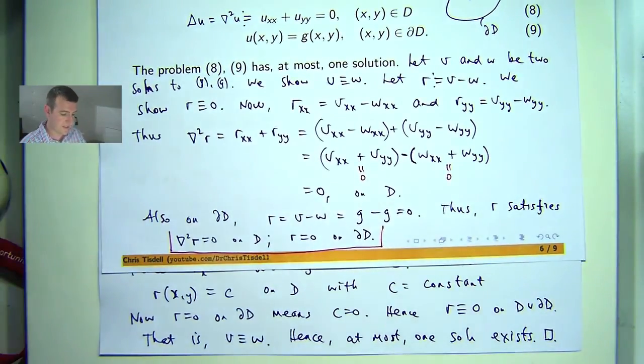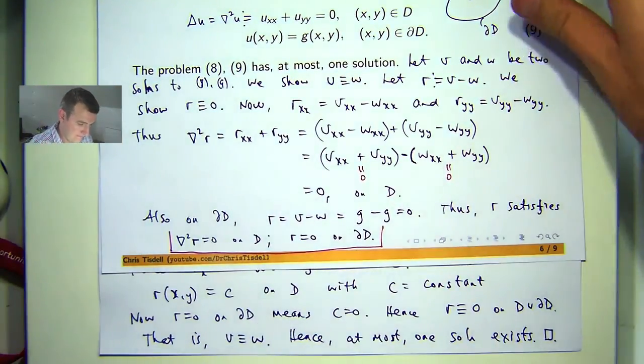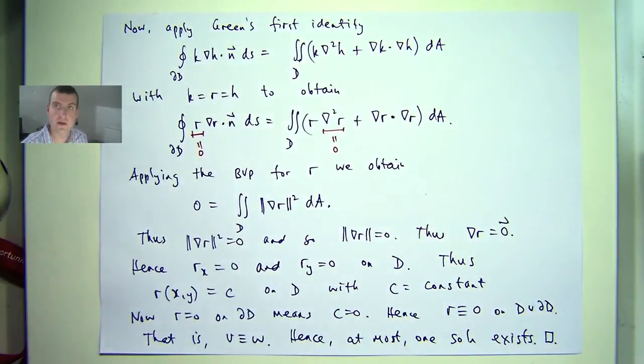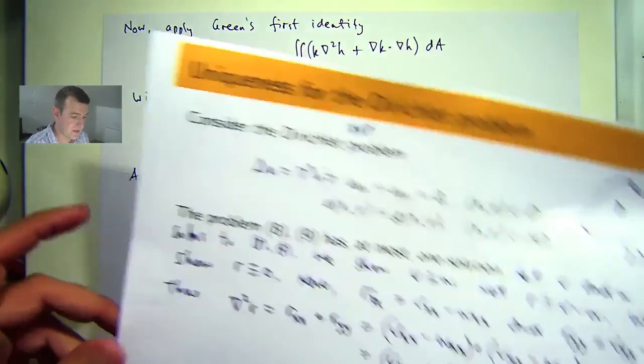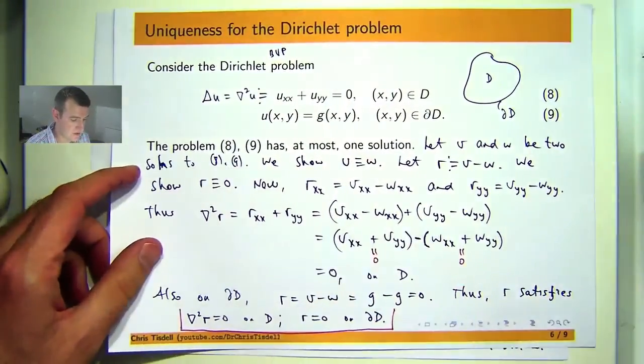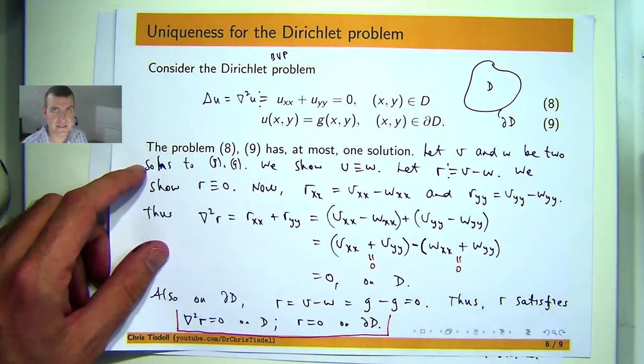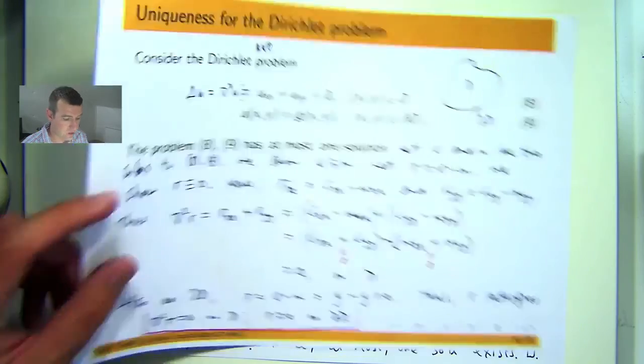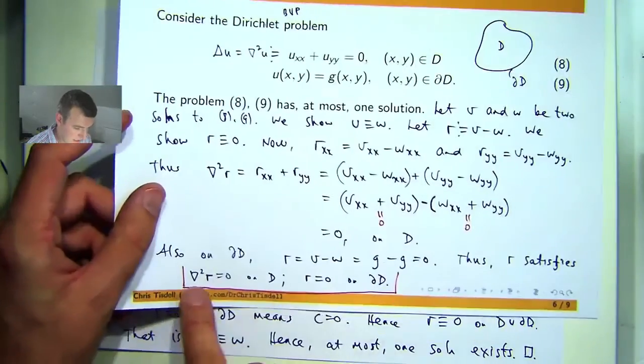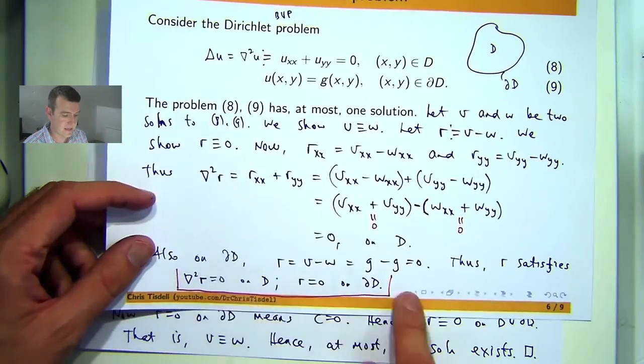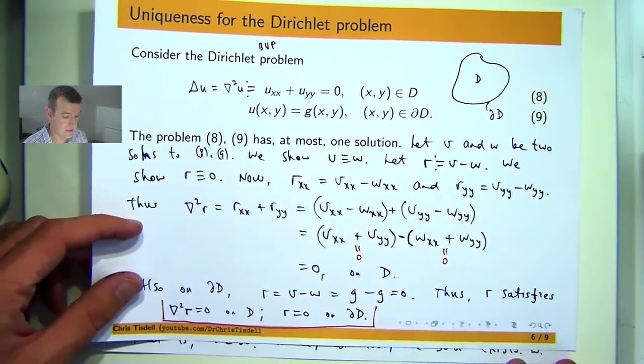So this is quite common for the proofs when you're asked to show that a certain problem has at most one solution. You assume there are two and then you look at their difference in some way and then you show that the new boundary value problem that we constructed down here and the other solution has only the 0 solution.